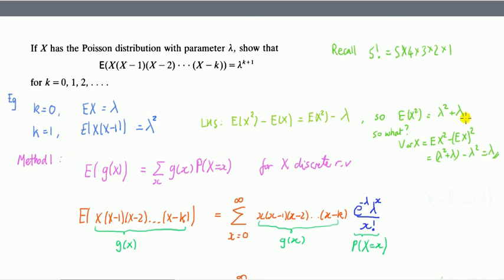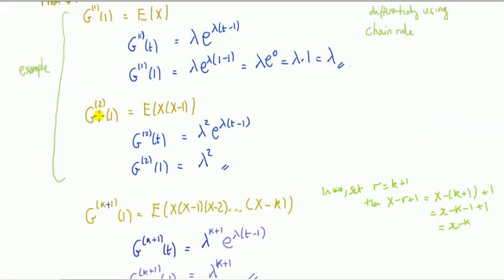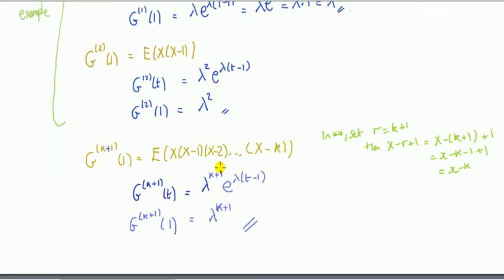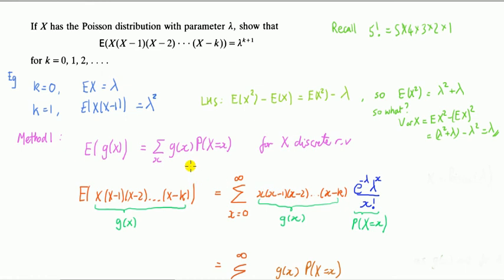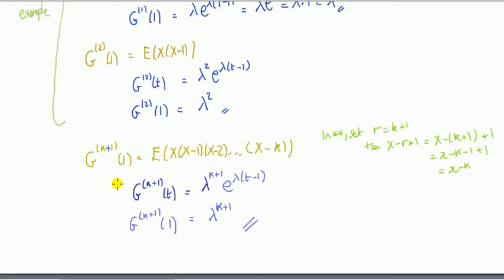The second factorial moment is E[x(x-1)]. Differentiating G(t) a second time gives lambda squared times e^(lambda(t-1)). Setting t=1 gives lambda squared. To answer the question generally, we set r = k+1, so we differentiate G(t) k+1 times, and evaluating at t=1 gives lambda^(k+1). Lo and behold, we have the answer.